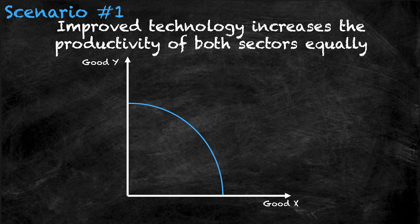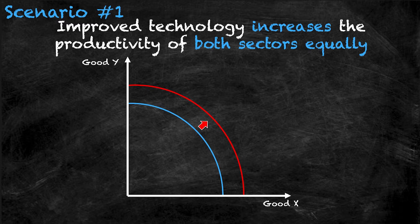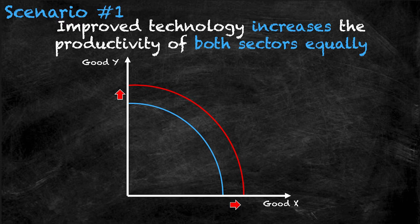Scenario one: improved technology increases the productivity of both sectors equally. We know that an increase in productivity will shift the PPF to the right. The significance of both sectors being impacted equally is that the y-intercept and the x-intercept have increased by the exact same amount — there's no distortion in the PPF, just a clean shift to the right. This means that due to this technological advancement the economy can now increase production of both good x and good y.